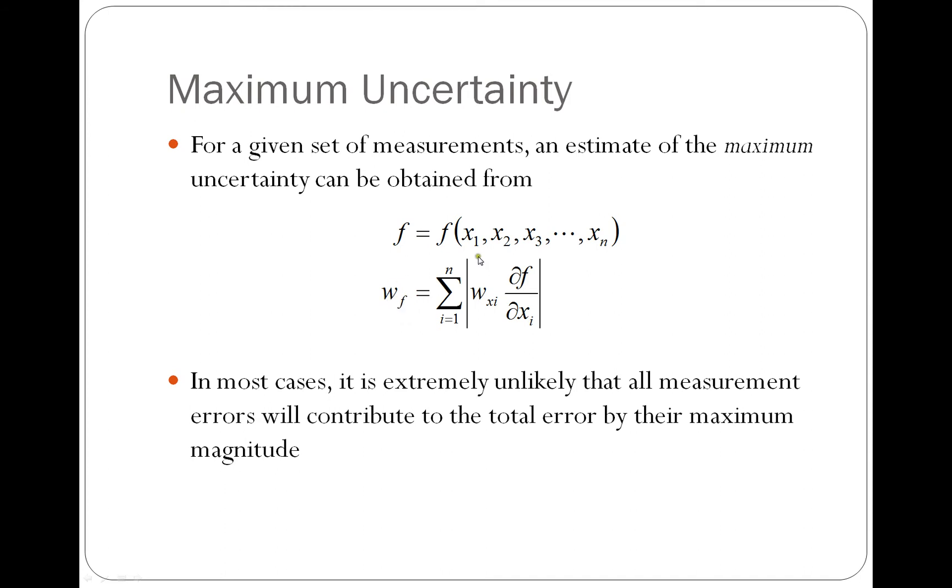So the way that we're going to do the calculation is we have to take the partial derivative of the function with respect to each of the individual measurement variables. We'll take that partial derivative and multiply it by the uncertainty in the variable that we took the partial derivative with respect to, and take the absolute value and repeat that for each of the measurements that were taken. We have to take the partial derivative of that function with respect to each of the variables that were measured. Okay, this gives us the maximum uncertainty, the worst case uncertainty.